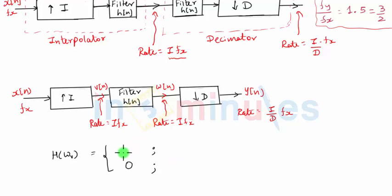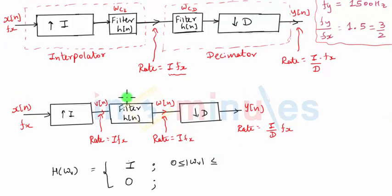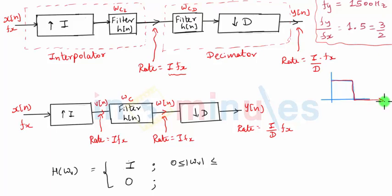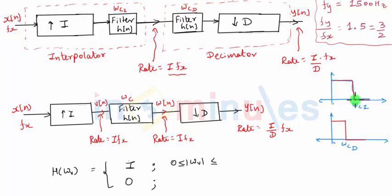For an ideal low-pass filter, the passband output should be one, but instead we take it to be capital I, the interpolation factor — we will see the reason for this. So the gain is I in the range from zero up to the cutoff frequency ωc. Now we have to decide what this cutoff frequency will be, because the anti-imaging filter had cutoff ωci and the anti-aliasing filter had cutoff ωcd. Both are low-pass filters — let's say the first filter had cutoff ωci and the second had cutoff ωcd.